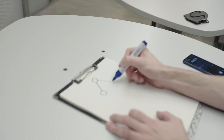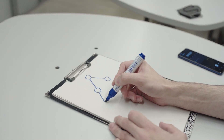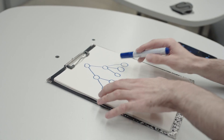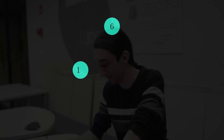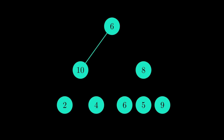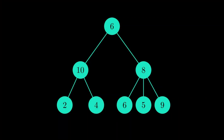Trees are graphs which do not have cycles. Let's draw a tree. Now tell me some numbers so I can fill up the nodes — six, ten, eight, two, nine.